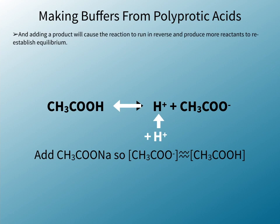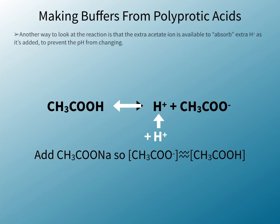Adding a product will cause the reaction to run in reverse and produce more reactants to re-establish equilibrium. Another way to look at the reaction is that the extra acetate ion is available to absorb extra H+ as it's added to prevent the pH from changing.